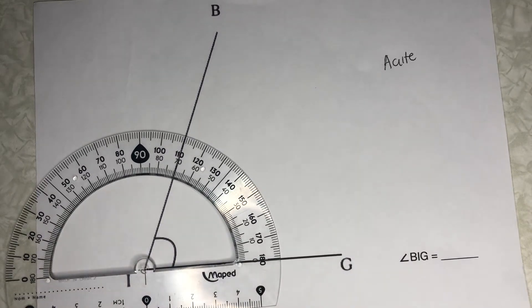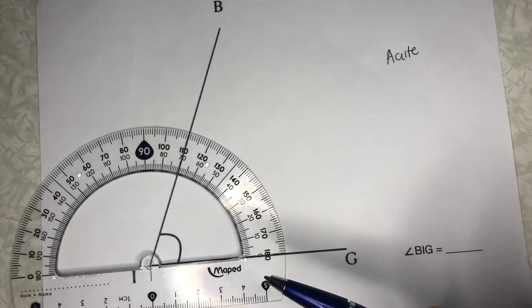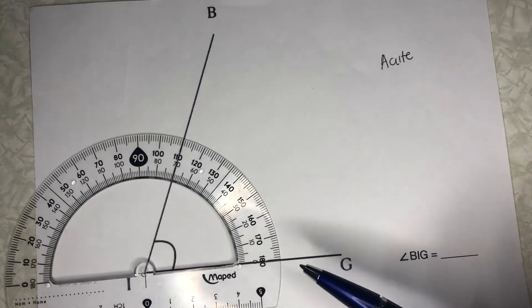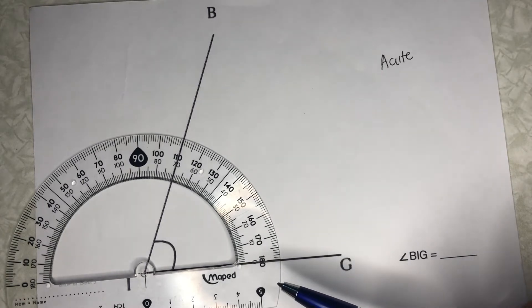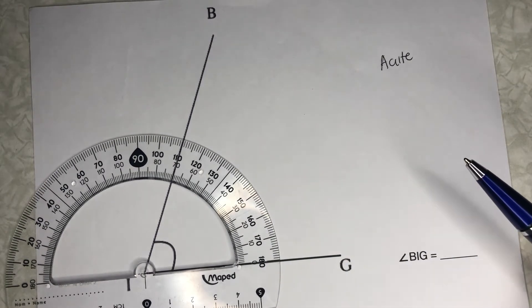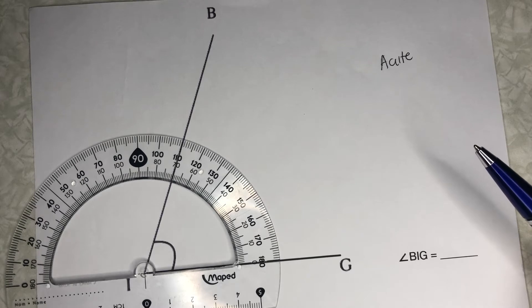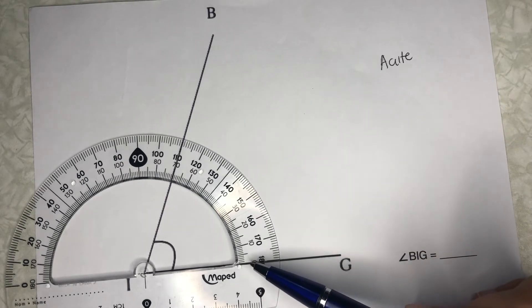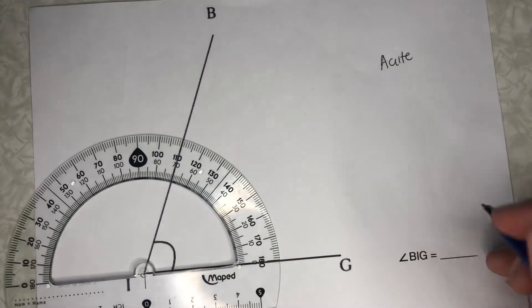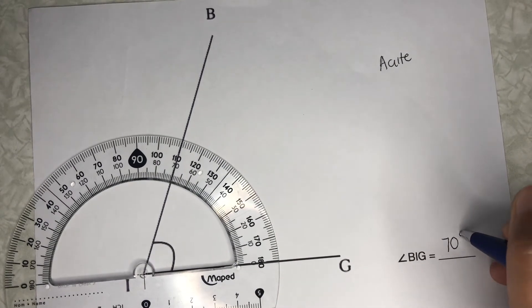Now that it's properly aligned, you have to ask yourself, which scale am I going to use? The scale you're going to use is based on where you align your baseline. We have here leg IG. Looking at leg IG, we have to find where the zero is. The zero is right here inside, so we have to use the inner scale. Let's now use the inner scale. From zero, you have to look where the other leg lands, and that is at 70 degrees. So this angle BIG is 70 degrees.